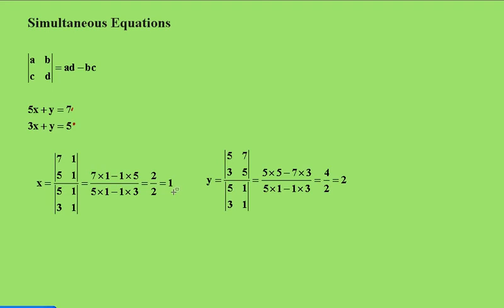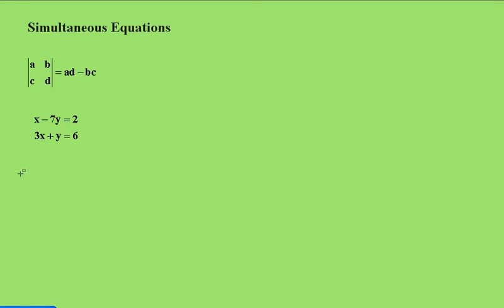Now I'll give you another pair for you to have a go at it, and then I'll give you the solutions to it. Here's the two equations: X minus 7Y equals 2 and 3X plus Y equals 6. Now pause the video and have a go yourself and then I'll put up the solutions.